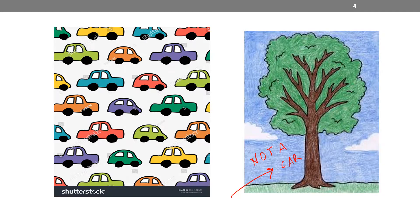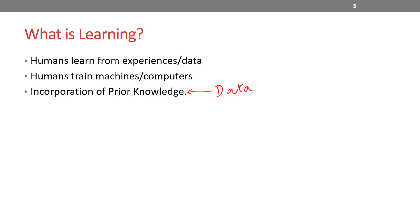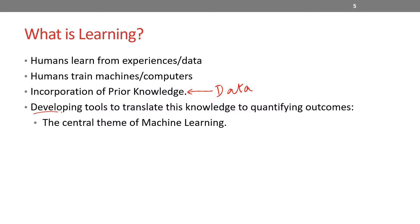How about if we can translate or transfer this human learning ability to machines? Can we do that? The good news is yes, we can. Humans learn from experiences, from previous data. Humans can train machines or computers — and how do we do that? We incorporate prior knowledge, and in this case, knowledge for computers is nothing but data. We incorporate prior data specific to the problem and develop tools, which are nothing but algorithms. We develop algorithms to translate this knowledge of data to quantifiable outcomes, enabling our program to predict things. That's the central theme of machine learning. Learning the way humans do can be translated to machines — and that's what machine learning is.